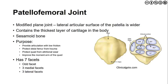Next we're going to talk about the patellofemoral joint. It's a modified plane joint. We have a lateral articular surface of the patella that's a little bit wider, and it does contain the thickest layer of cartilage in the body. It is considered a sesamoid bone and its purpose is to provide articulation with the tibiofemoral joint, to protect the distal femur and the quadriceps, and to improve the moment arm of the quadriceps — acting as a pulley. It has seven facets: an odd facet on the more lateral side, three medial facets, and three lateral facets. The patellofemoral joint improves the efficiency of extension, specifically helping with the last 30 degrees of knee extension by transmitting forces across the knee, increasing the moment from the axis, and decreasing the coefficient of friction for the quadriceps mechanism.